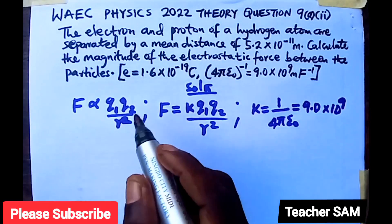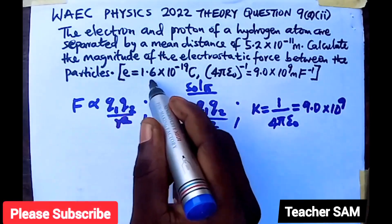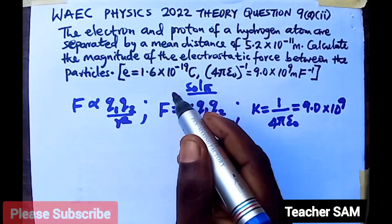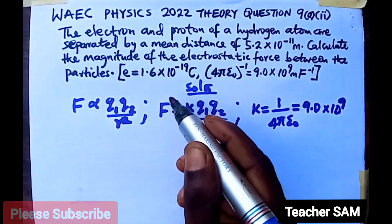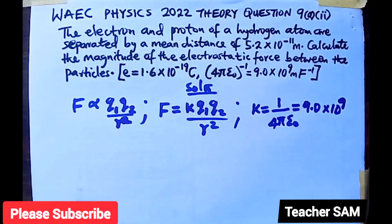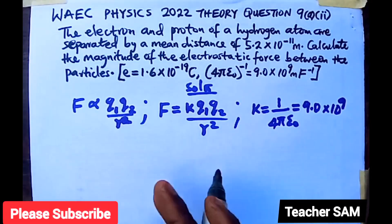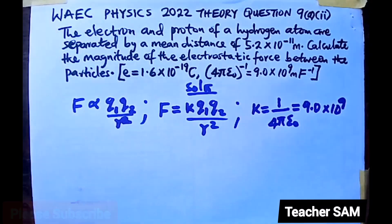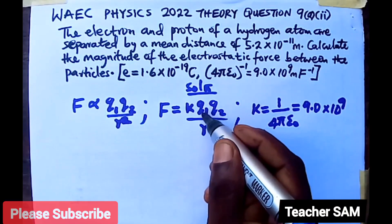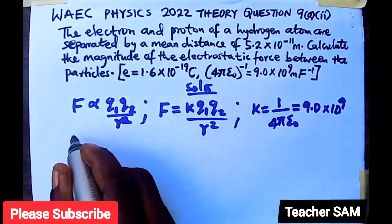We are given that the charge on the electron is 1.6 times 10 raised to negative 19 coulombs. The charge of the electron is equal in magnitude to the charge on the proton — they have opposite signs, but in terms of magnitude they are the same. So both charges are equal.